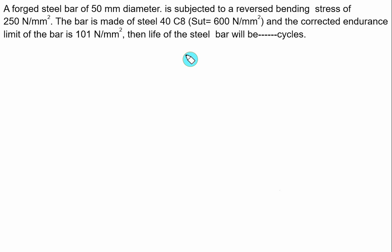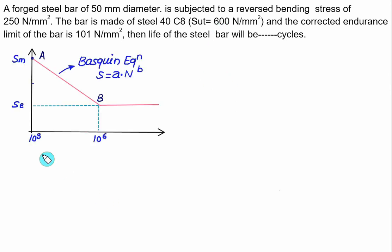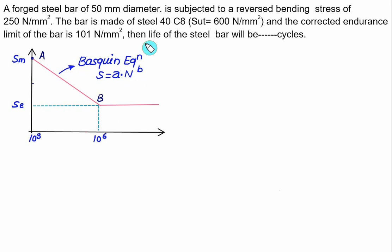Whenever you have to find out the finite life, you can use the Basquin equation. For reverse bending, the material strength SM will be equal to 0.9 times SUT. The Basquin equation is applicable for finite cycles from 10³ to 10⁶ and is given as S = A × N^B.